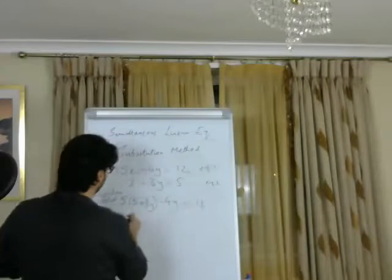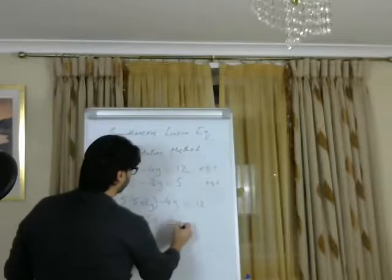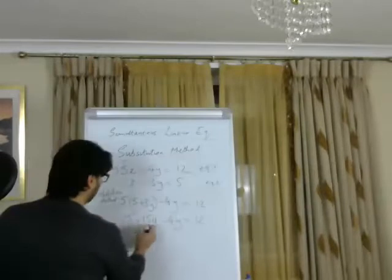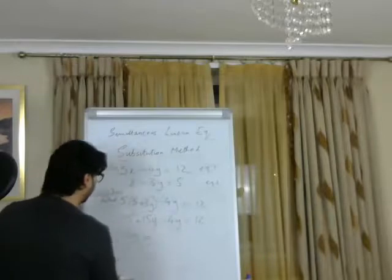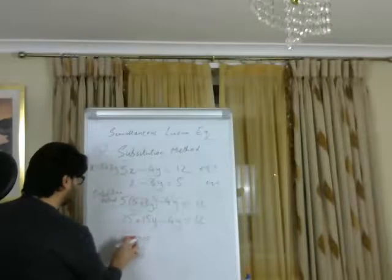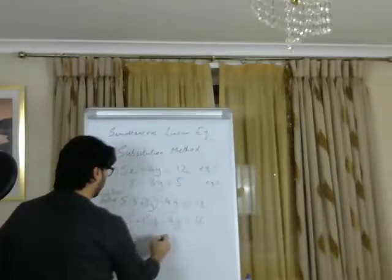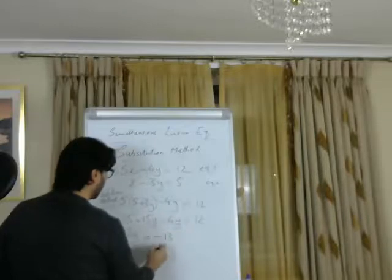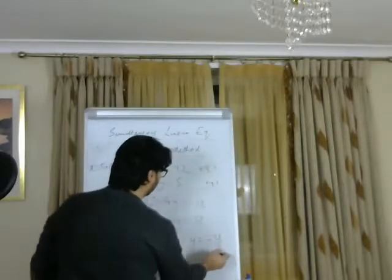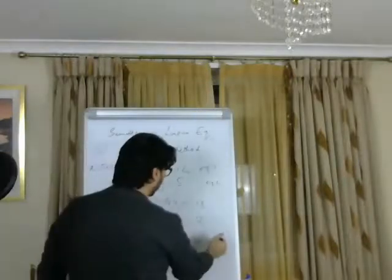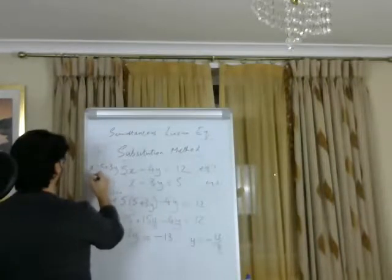Now I'm going to find what value y carries. We know that 5 times 5 is 25 plus 15y minus 4y, which equals 12. Then we can say 15y minus 4y, which becomes 11y. And then 12 minus 25 will give you minus 13. So therefore y equals minus 13 over 11. We found the value for y, so y is one coordinate. We found one point of the coordinate, which is minus 13 over 11.